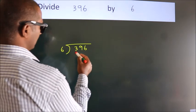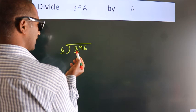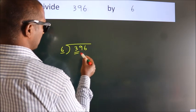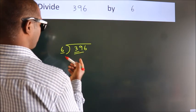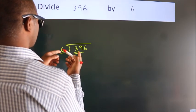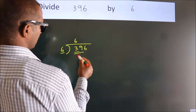Here we have 3, here 6. 3 smaller than 6. So, we should take 2 numbers, 39. A number close to 39 in 6 table is 6×6=36.